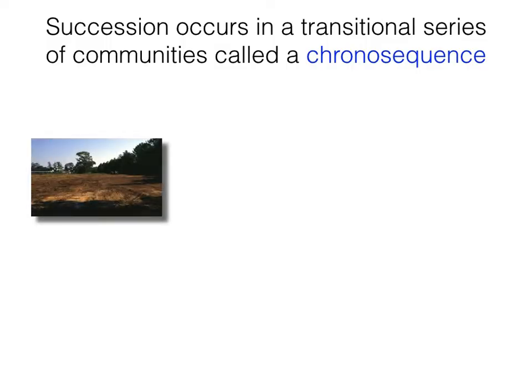Succession occurs in a transitional series of communities called a chronosequence — that is, a chronological sequence of ecological communities over time. Any given succession occurs in a characteristic sequence of stages. On a given site and under a given set of climatic conditions, a chronosequence ultimately leads to a terminal, or what's sometimes referred to as a climax community. This is an example from old fields, which are abandoned agricultural fields. You can see many of these on the East Coast, and possibly also in the Central Valley as some agricultural fields are left fallow and allowed to return to former vegetation.